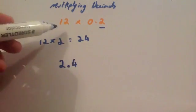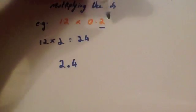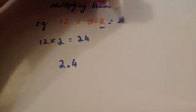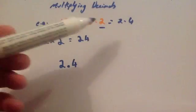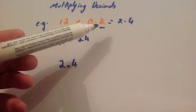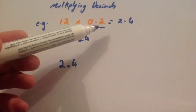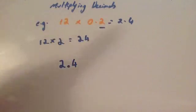So the answer to 12 multiplied by 0.2 is 2.4. There is one digit after the decimal point in the question, so there is one digit after the decimal point in the answer.